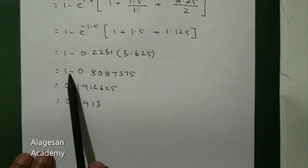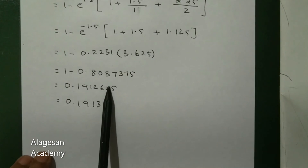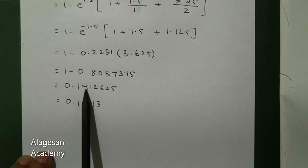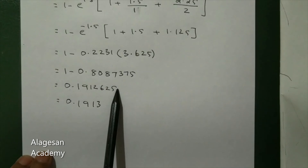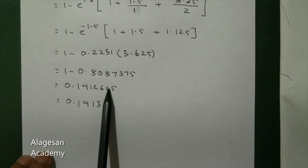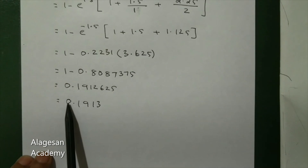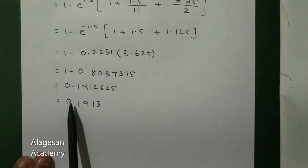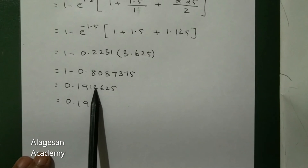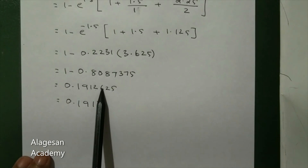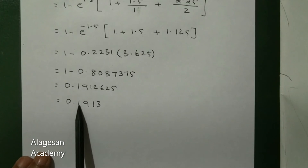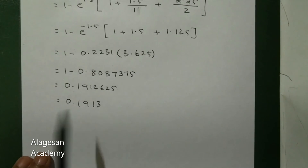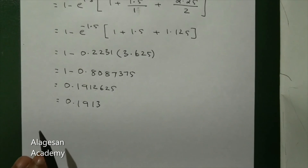Subtracting, we get 0.1912625. Rounding to 4 decimal places, since the 5th digit is 6, the 2 becomes 3. So the final answer is 0.1913.